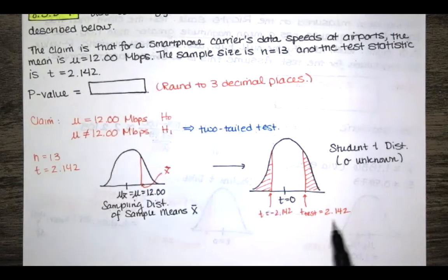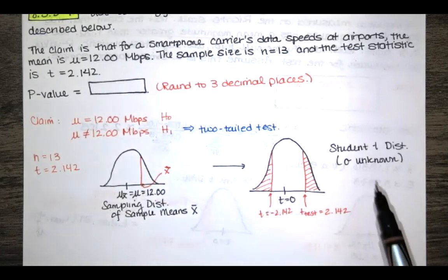Now we don't have a table that gives us areas for student t distributions because student t distributions have different shapes depending on the sample size.